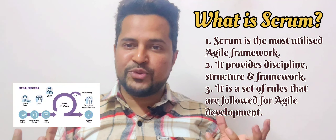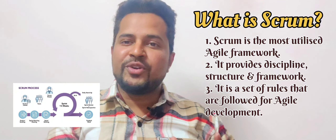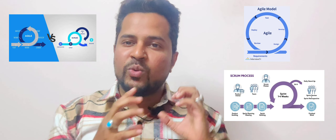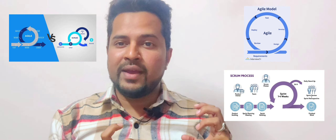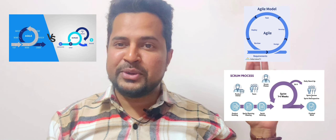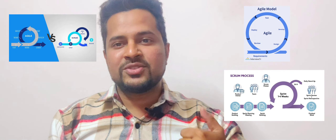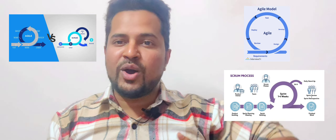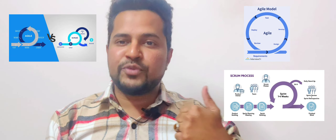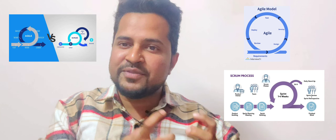Scrum is a set of rules that are followed for Agile development. Still confused? Let me give you some examples. What is the difference between a vehicle and a car? What is the difference between a color and the color red? Similarly, Agile and Scrum are correlated to each other. Agile is a methodology or model of the software development cycle, whereas Scrum is a framework of Agile, which has a set of rules and different things available in it.